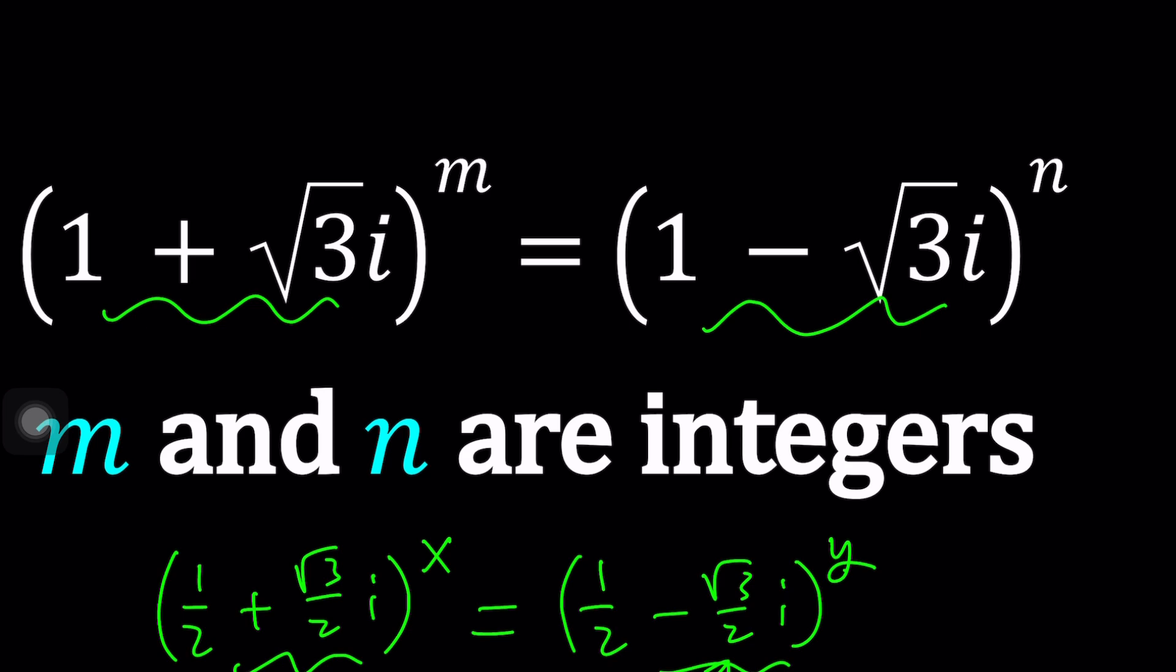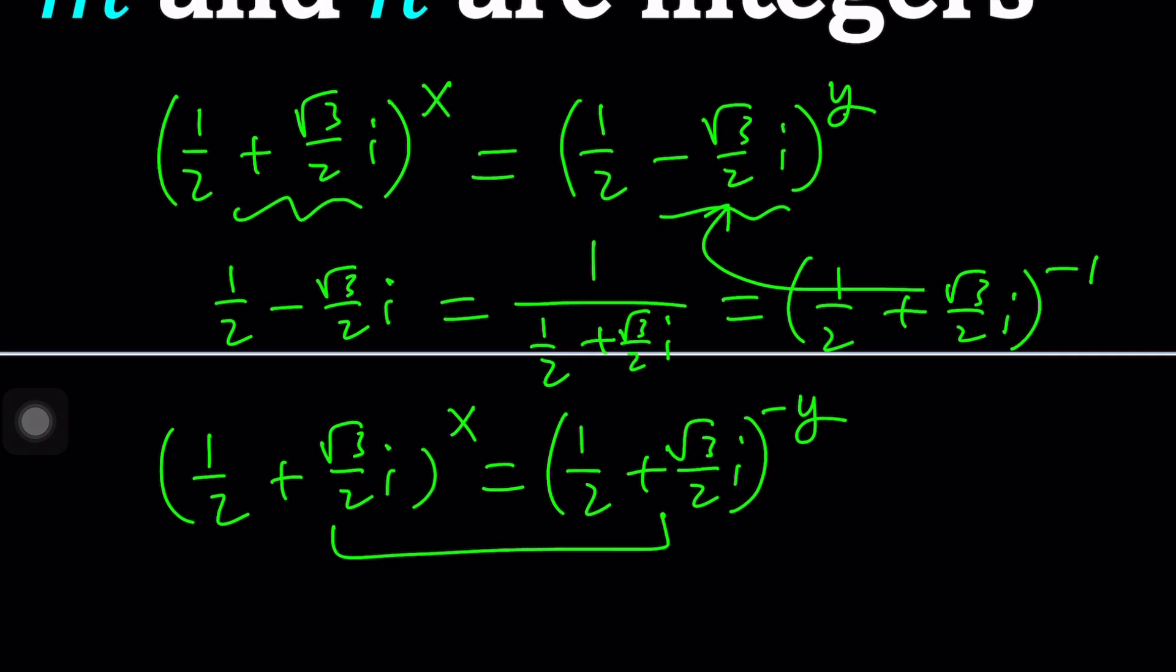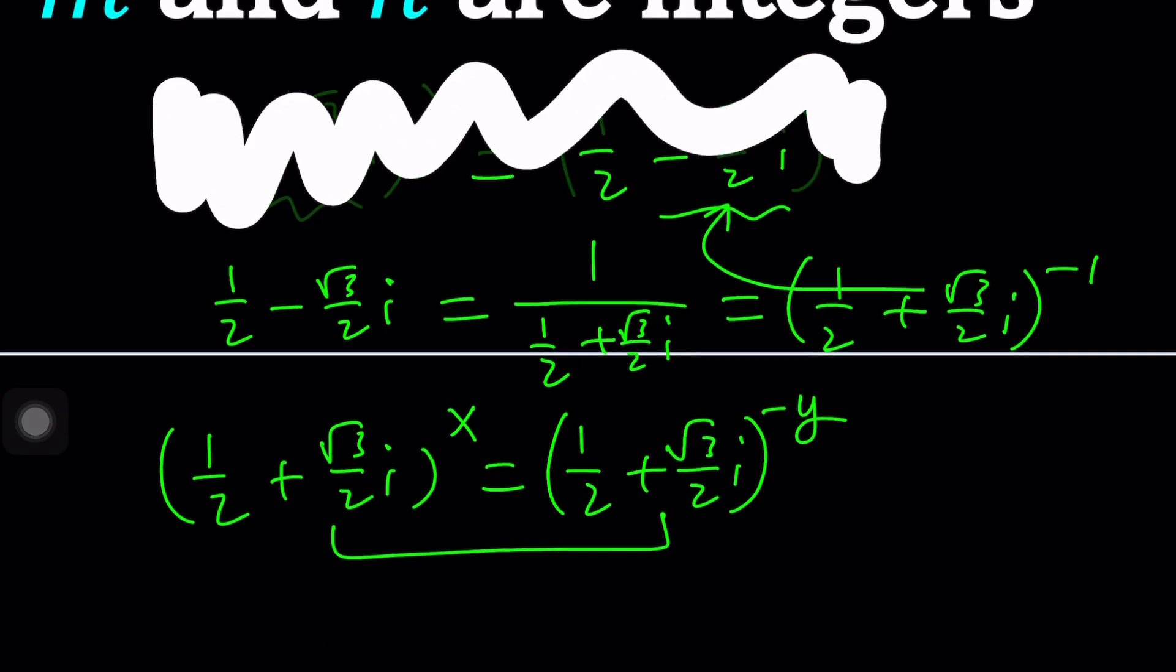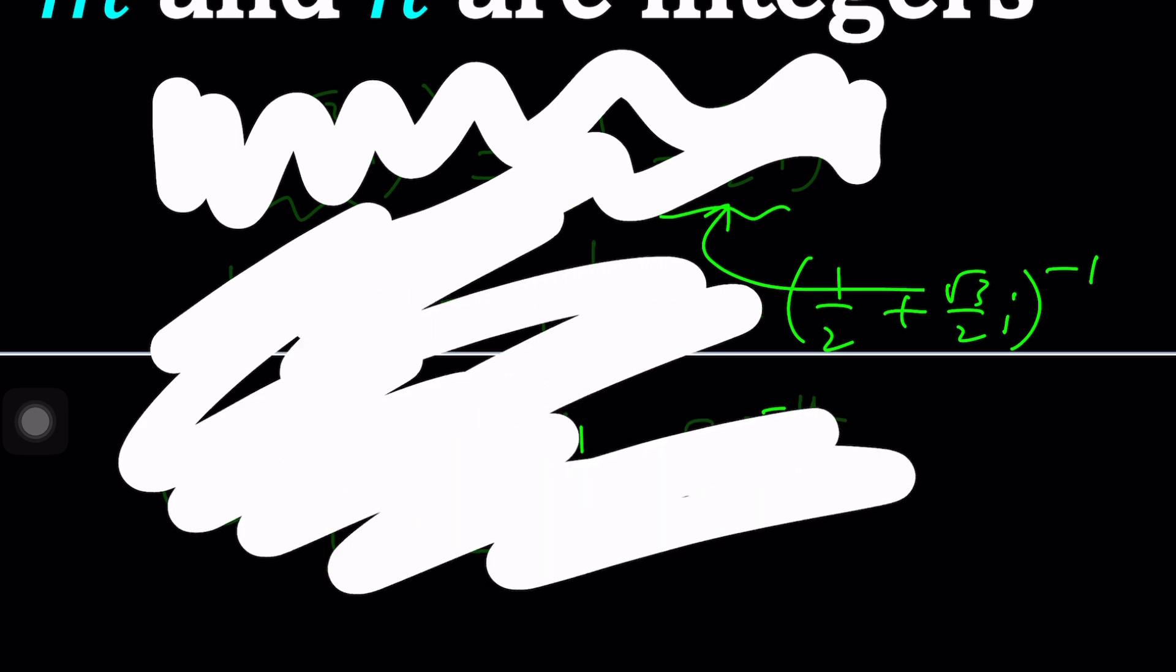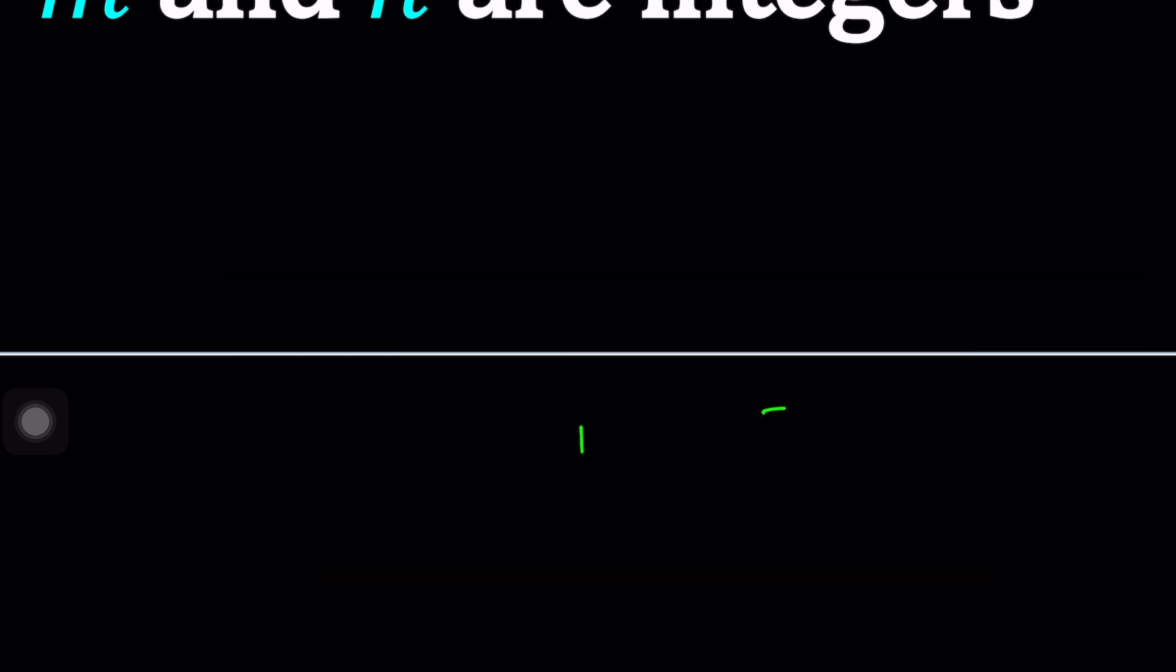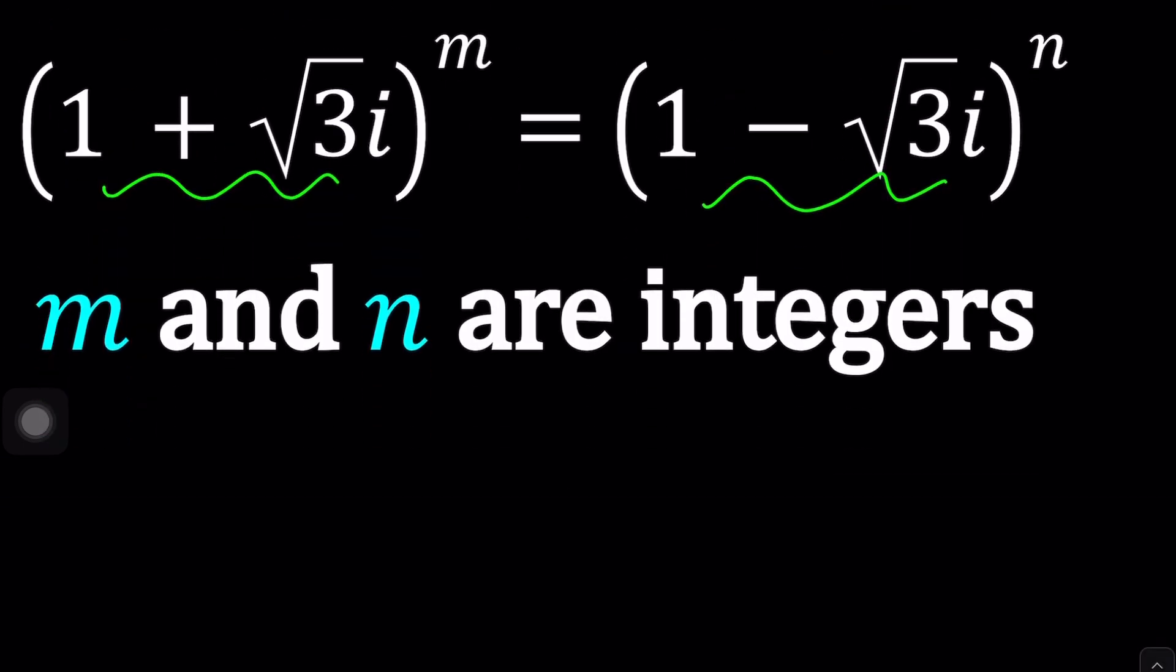We use another strategy which is thanks to Euler, Euler's formula or polar form. So let's go ahead and convert these expressions into polar form because as is it's very difficult to handle. So let's go ahead and do this.